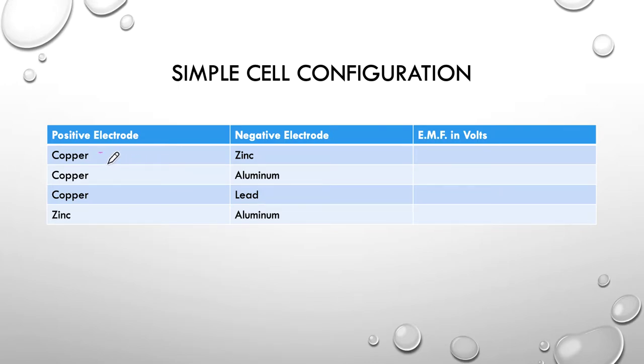So you can see here the combinations we're going to do things in. We're going to keep the positive electrode mostly copper for most of the time then we're going to use zinc aluminium and lead and then finally we're going to have a zinc and aluminium combination.